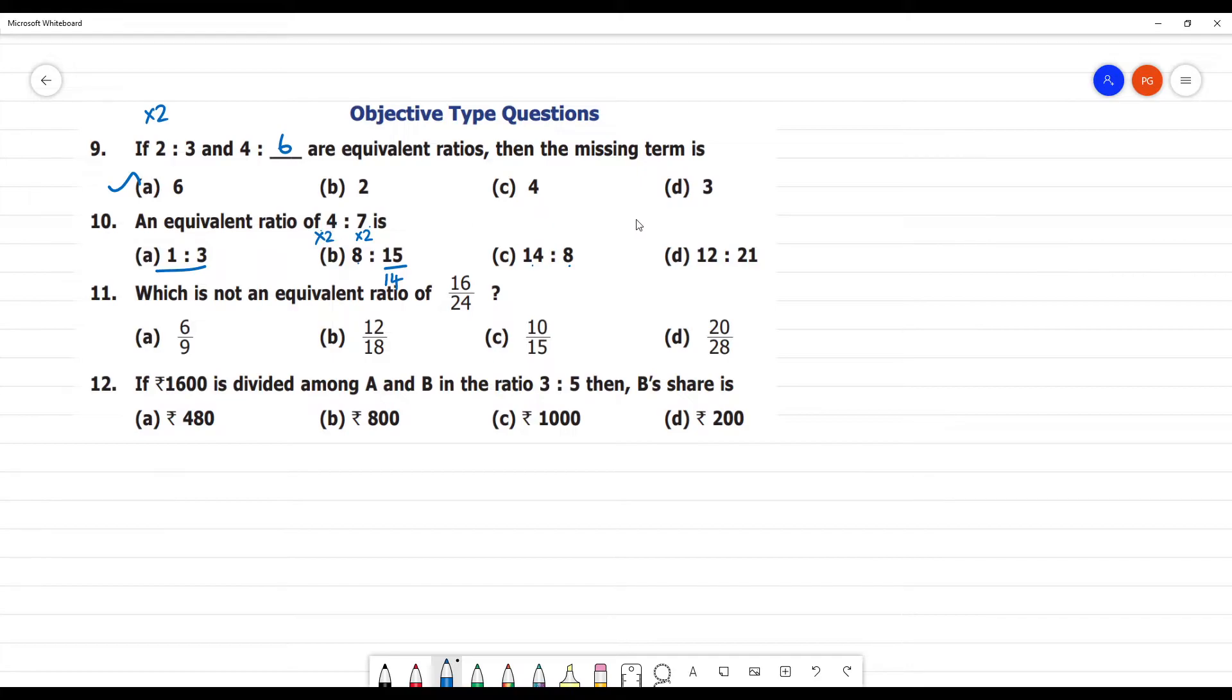Next, number 4 multiplied by 3 is equal to 12. Number 7 multiplied by 3 is equal to 21. The answer is 21. That is 4 is to 7. Multiplied by 3. 4, 3 is equal to 12 and 7, 3 is equal to 21.